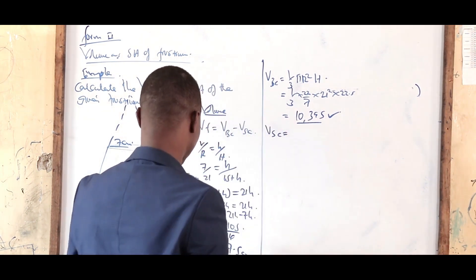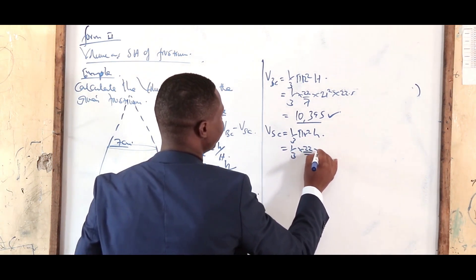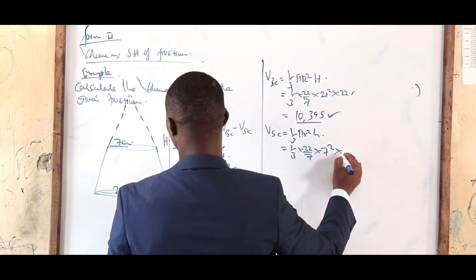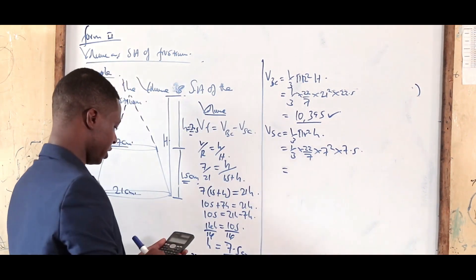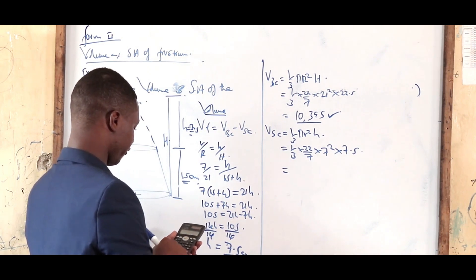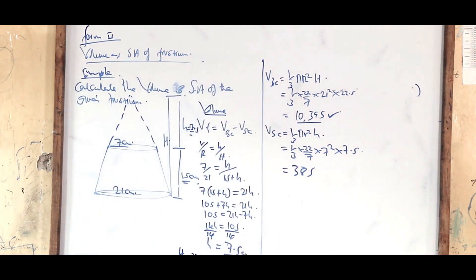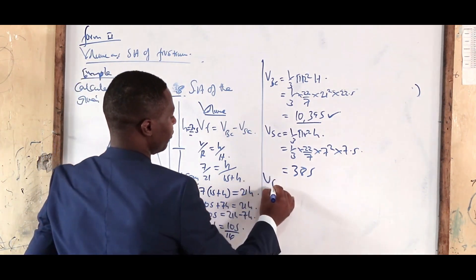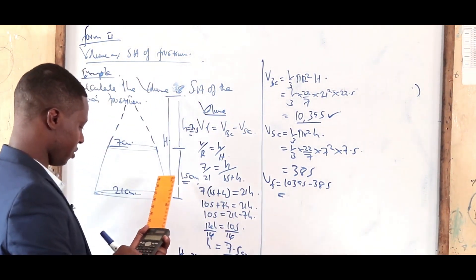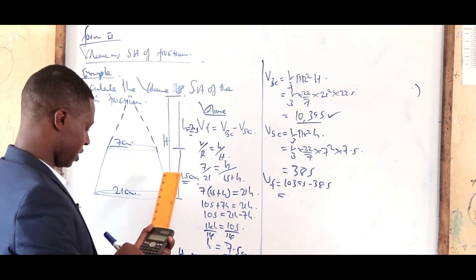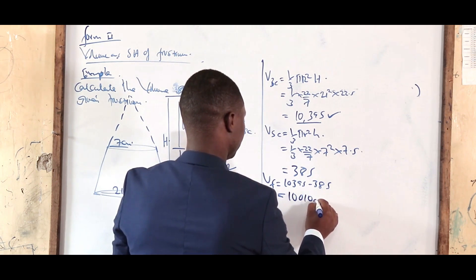The volume of the smaller cone equals one-third × π × r² × h = one-third × 22/7 × 7² × 7.5, which gives 385 cm³. Therefore, the volume of the frustum equals 10,395 minus 385, which gives 10,010 cm³.